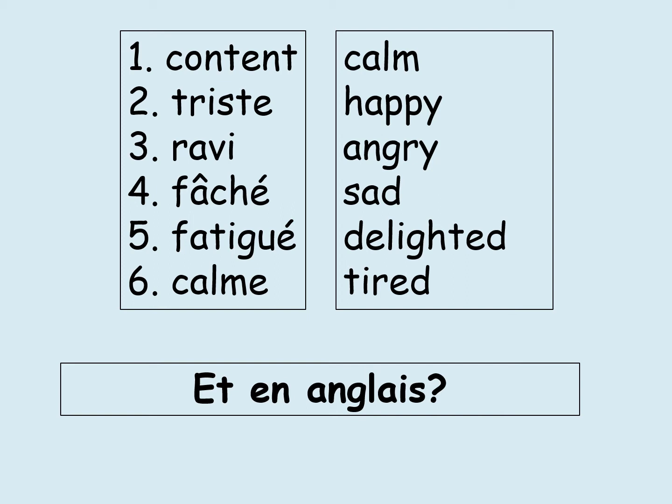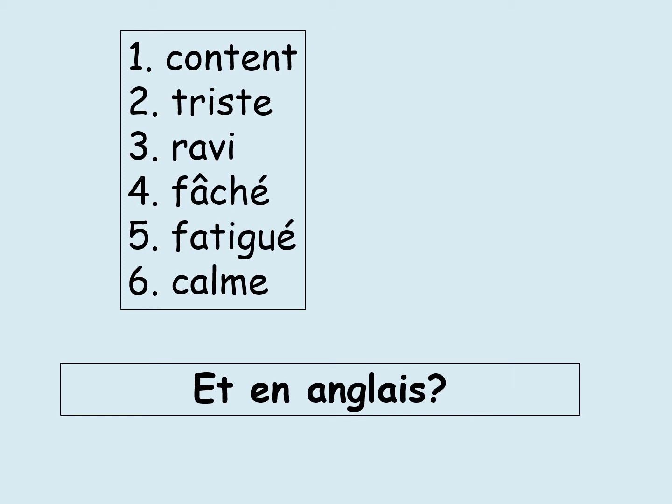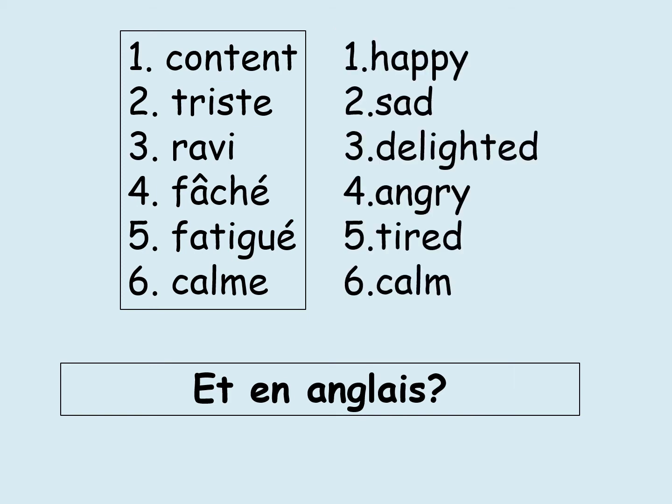Content is happy, triste is sad, ravi is delighted, fâché is angry, fatigué is tired, and calme is calm. So those are the six emotions that we're going to concentrate on and use to extend our sentences.